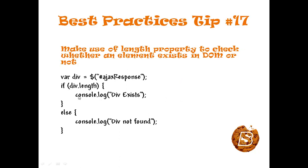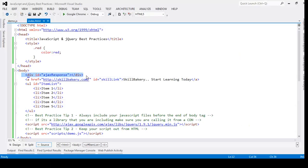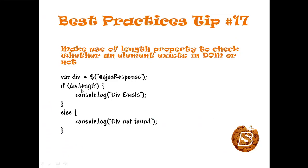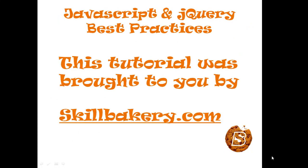Tip number seventeen: we should always ensure that whatever element we are trying to perform an operation on is actually present in the DOM. To check this, we can use the length property. If we have an element with ID 'ajaxResponse', if its length is greater than zero, it evaluates to true and we say 'div exists', otherwise 'div not found'. This tutorial was brought to you by SkillBakery.com.